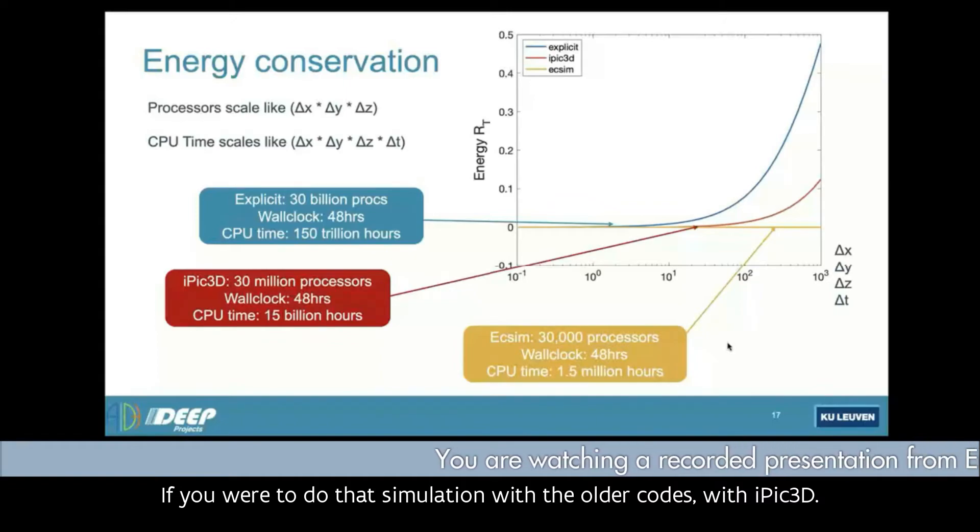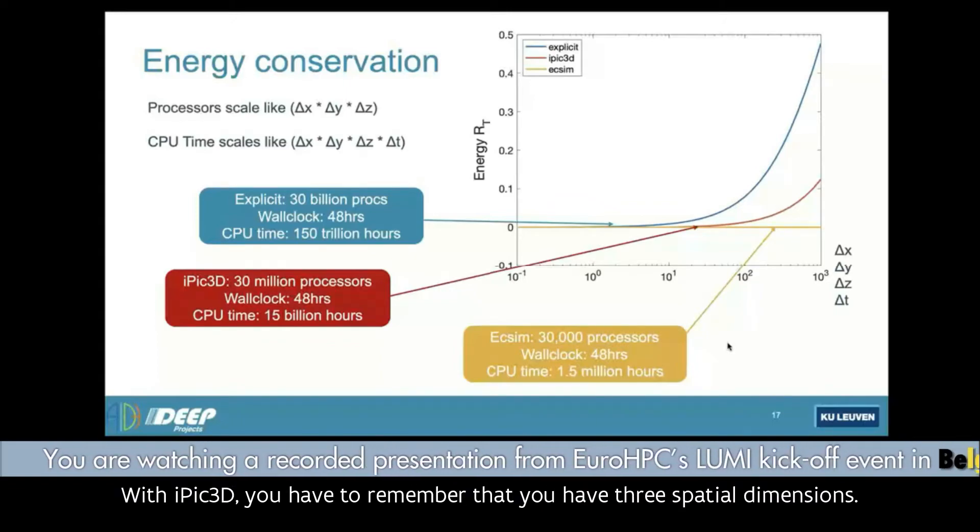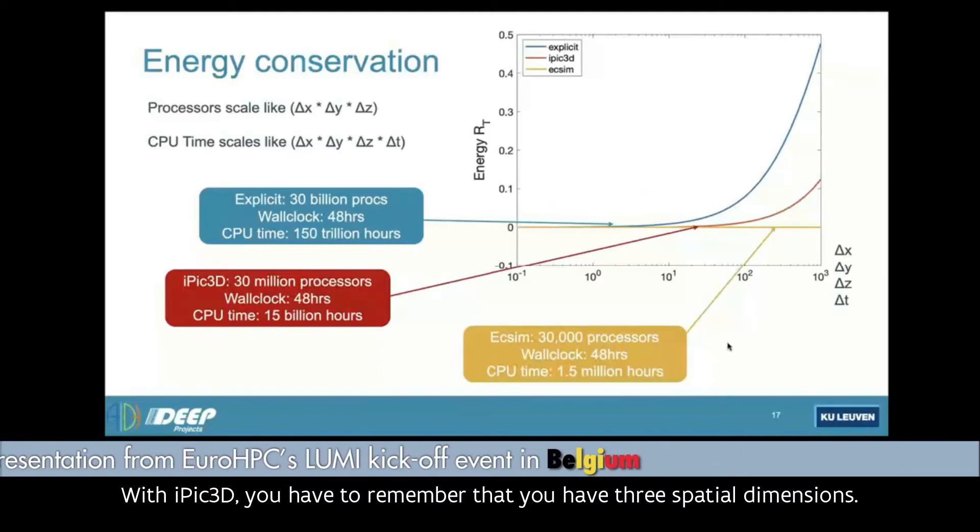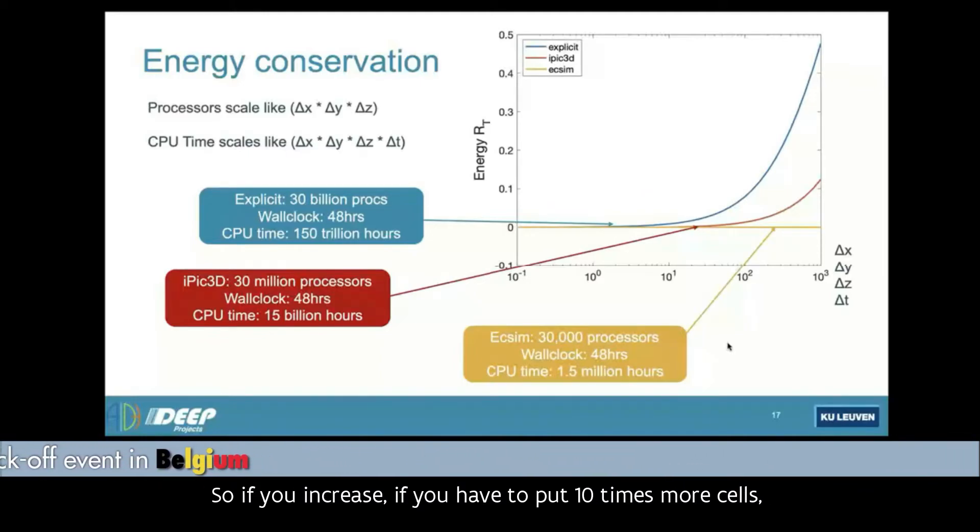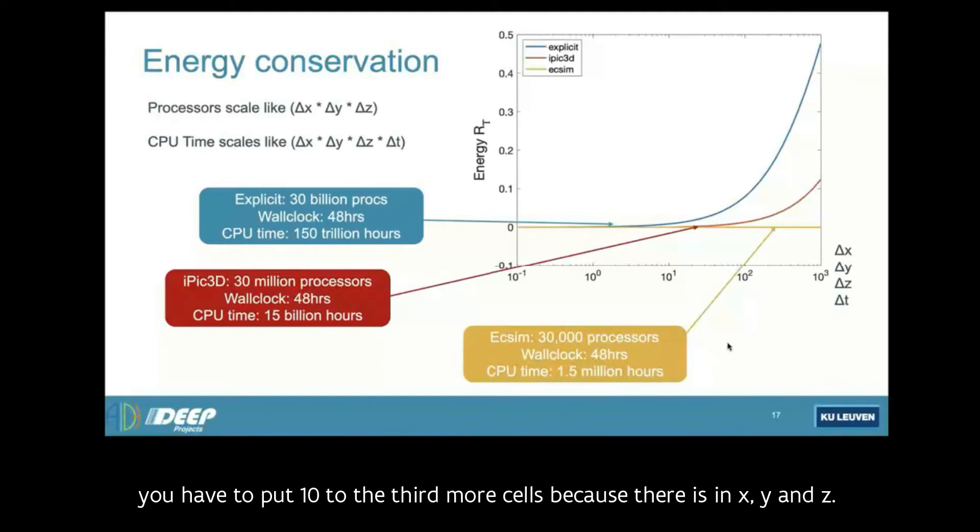If you were to do that simulation with the older codes, with iPIC3D, you have to remember that you have three spatial dimensions. So if you increase, if you have to put 10 times more cells, you have to put 10 to the third more cells, because it's in X, Y, and Z. And if you reduce the cell size, you also have to reduce the time step. Because of course, the CFL condition has to be satisfied. Otherwise, the particles will travel many cells in one time step. So you also have to reduce the time step. So that means that the factor of 10 to the fourth goes into the increase of computational time, and 10 to the three in the number of processors that you need. So this same simulation that I'm going to show you next, would have taken 30 million processors instead of 30,000 processors. And it would have taken 15 billion computer CPU hours.